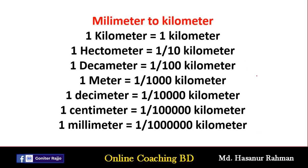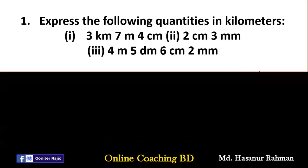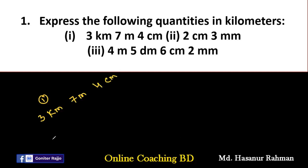Now let's start our exercise. The first question says: express the following quantities in kilometers. Number one: three kilometers, seven meters, four centimeters. We have to convert everything into kilometers. The kilometers are already given, so we don't need to convert those — we just convert the meters and centimeters.